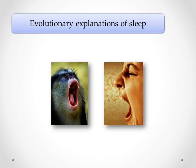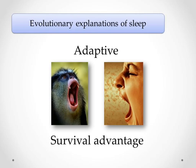According to the evolutionary approach, animal behaviour which increases survival has been passed on through our genes, whereas behaviour that compromises survival will have been selected out of the gene pool. Evolutionary explanations of sleep propose that sleep serves an adaptive purpose and has evolved in order to maximise an animal's chance of survival.